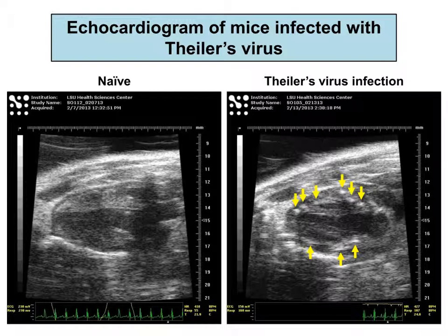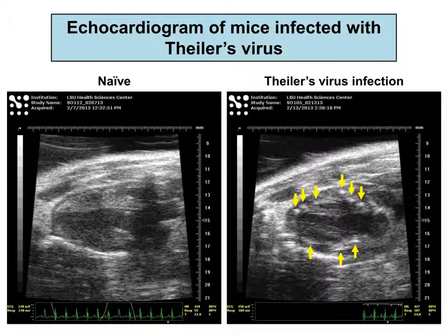This is an echocardiogram of naive C3H mice on your left and that of infected C3H mice on your right. We found high-intensity lesions only in infected mice.